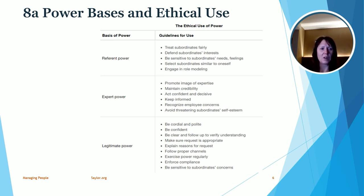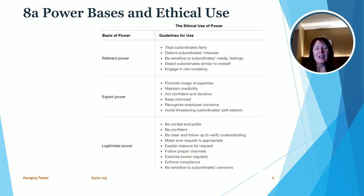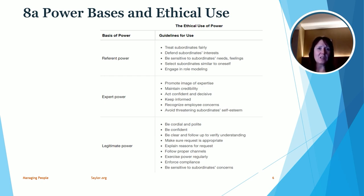Some of these bases of power include referent power, which is the type of power where you're a role model as a leader and manager — you are sensitive to people's needs and feelings, and everyone is treated fairly. This type of power, sometimes called charisma, can be really important and valuable in order to get things done within your organization. Our next form of power is expert power, which results from someone being really good at what they do. For example, in a technology company, a person may wield power because they're an expert in networking systems — very knowledgeable with a lot of experience — so people look to them in that particular area.